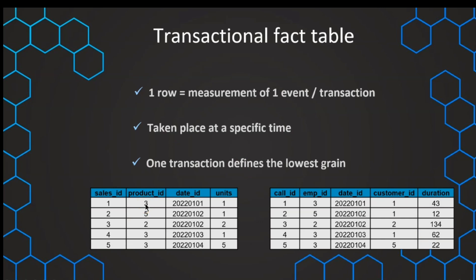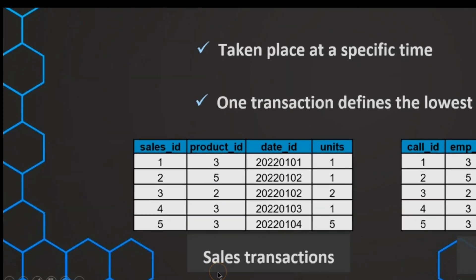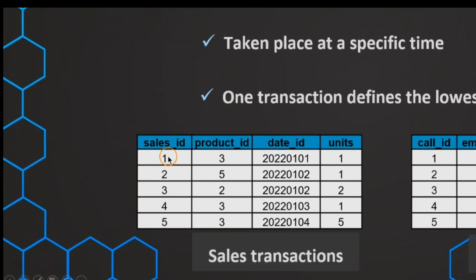Let's have a look at an example. We have a sales transaction where one row is just one transaction. In this transaction, we can have different measurements — for example, units: how many units have been sold in this single transaction. And then we also have foreign keys: what was the product, what was the time of the transaction, the date, and other dimensions.